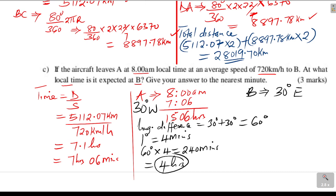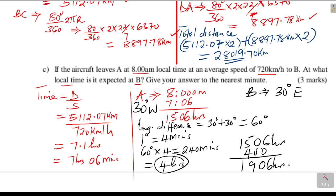Therefore, when it is 15:06 at A, the local time at B will be 4 hours more: 15:06 plus 4 hours equals 19:06 hours, or 7:06 p.m. That will be the local time at B, brought about by the differences in longitudes. That is how you solve that question.